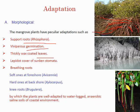Third, mangroves have waxy leaves. The waxy coating helps reduce the rate of evaporation because whatever fresh water they absorb through the roots must be stored — otherwise evaporation losses would be huge. Fourth, they have breathing roots, also called pneumatophores. Because the soil lacks oxygen, the plants must take oxygen directly from the air, so the breathing roots grow upward and out of the soil.